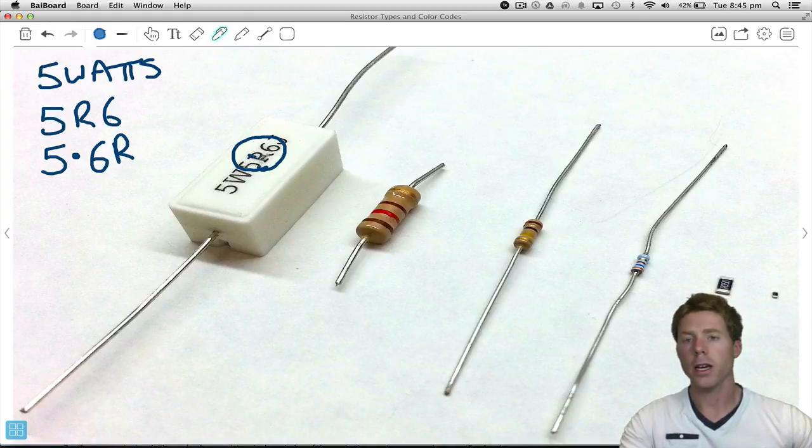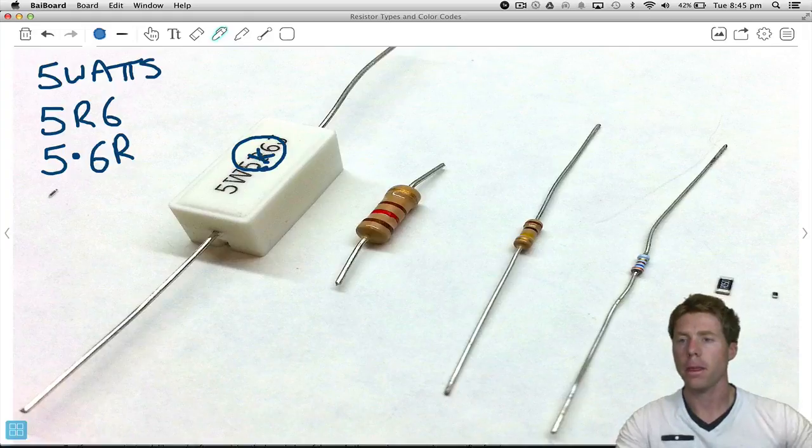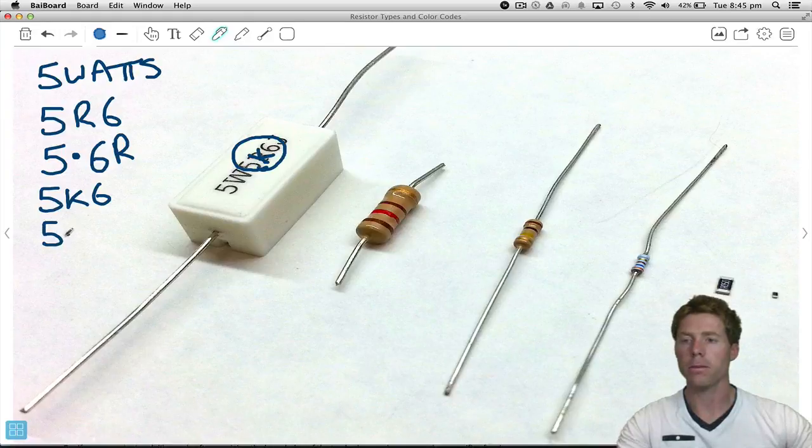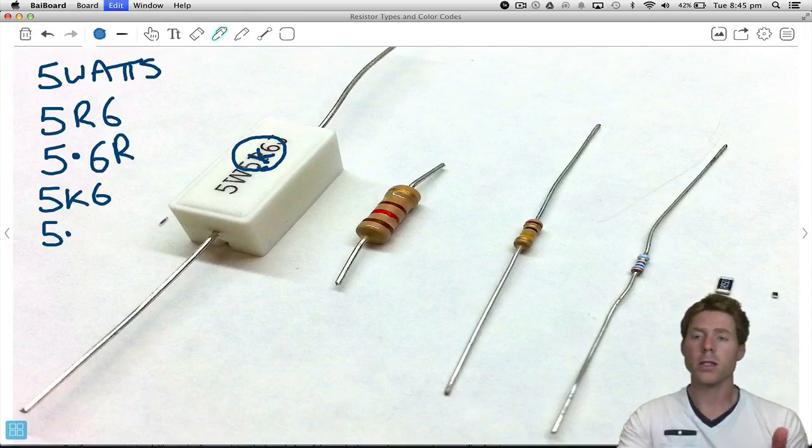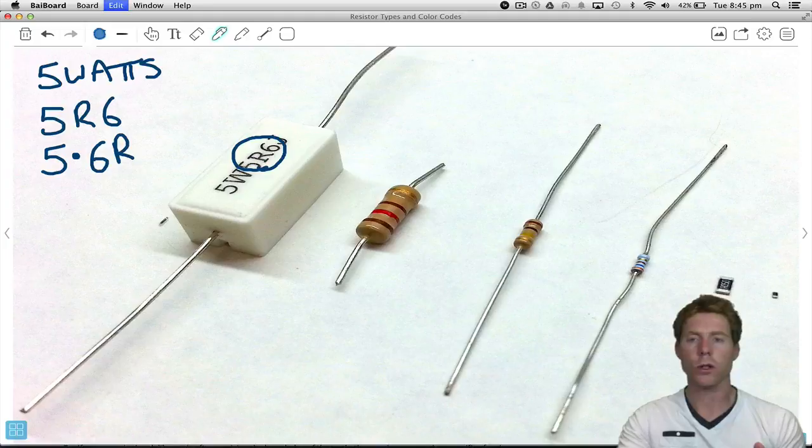If this was a K instead of an R, it'd be 5K6. What we do is we replace that letter with a decimal point and then put the K over here. That would tell us it's 5.6K. Now this isn't a convention that I'd really like to use at all.